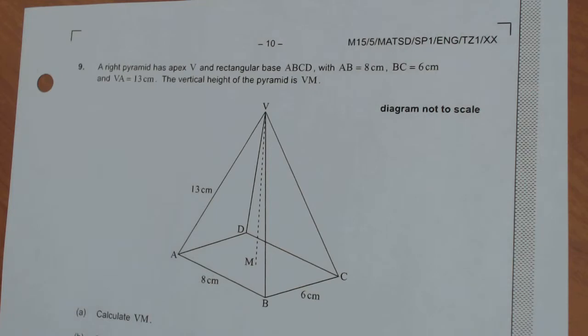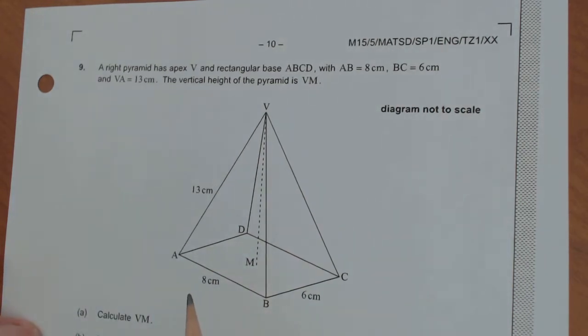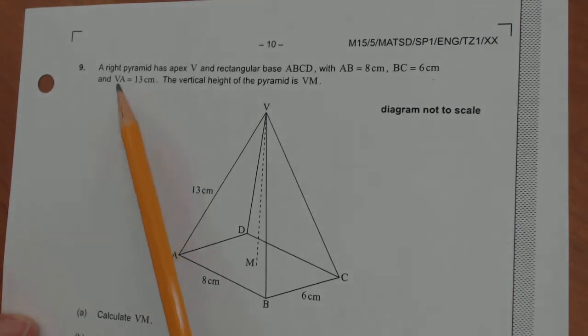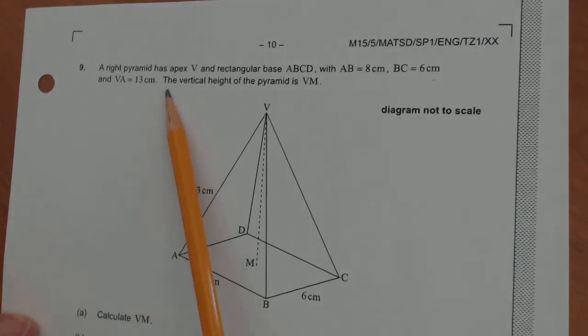A right pyramid has apex V and rectangular base ABCD with the distance between A and B equaling 8 centimeters, the distance between B and C equaling 6 centimeters, and the distance between V and A equal 13 centimeters. The vertical height of the pyramid is the distance between V and M.